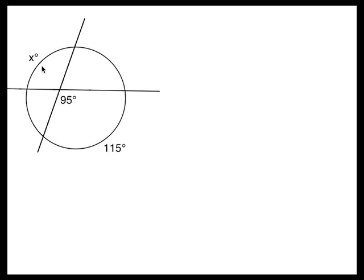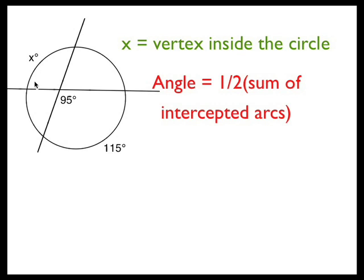The vertex is inside the circle still and so the angle is half the sum of the intercepted arcs.